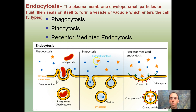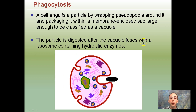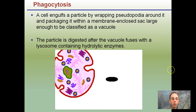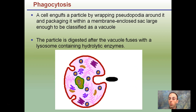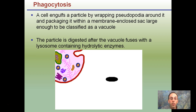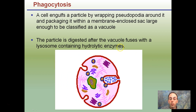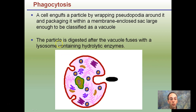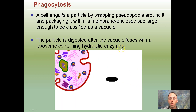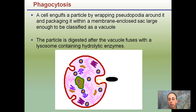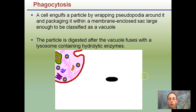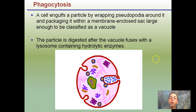Starting with phagocytosis, the cell engulfs the particle by wrapping around it, packaging it within a membrane, and classifying it as a vacuole. The particle is digested after the vacuole fuses with a lysosome containing hydrolytic enzymes. So basically, we're taking something in, sealing it off, and in this case destroying it — adding enzymes to help break it down. This is an example of phagocytosis.